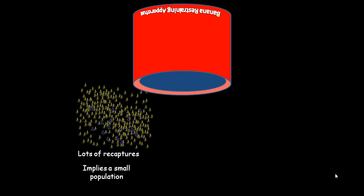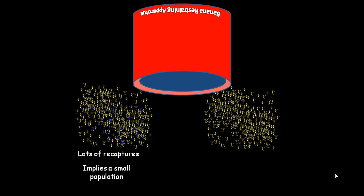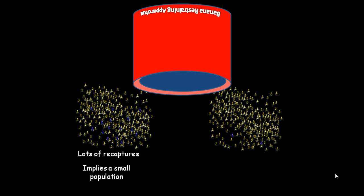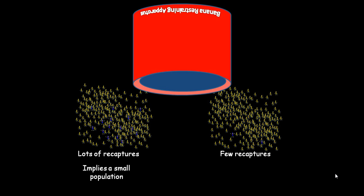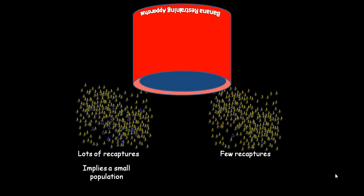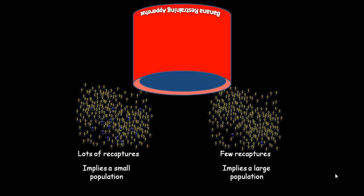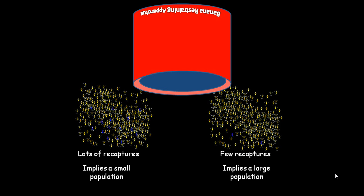If our second sample has few recaptures in it, then that implies that our original population size was large. Because we have diluted our marked individuals among a whole mass of unmarked individuals.